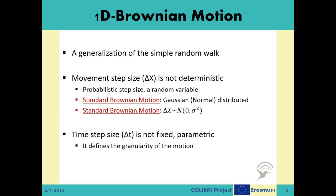If we select a big time step, we can have a general idea about the probable location of the molecule at the end of this time period. However, we will be missing a lot of detail and end up with a very rough estimate. As the selection of the time step becomes smaller and smaller, the analysis becomes better in quality with an increased price of computational complexity. Theoretically, we can reach the real diffusion process if we choose the time step as an infinitely small number.